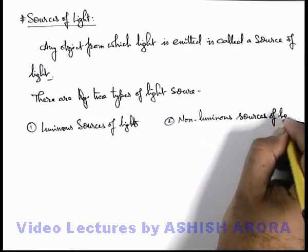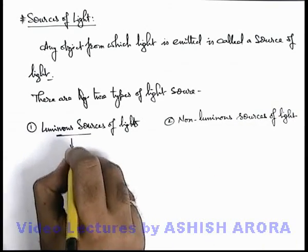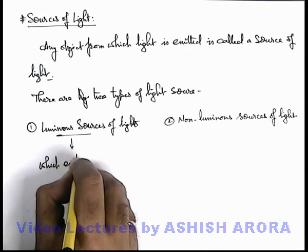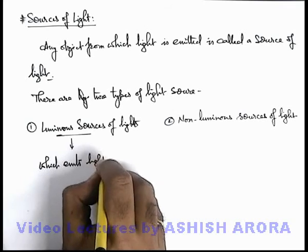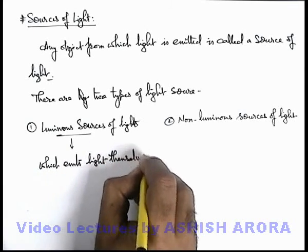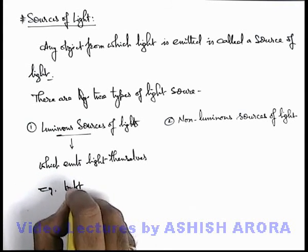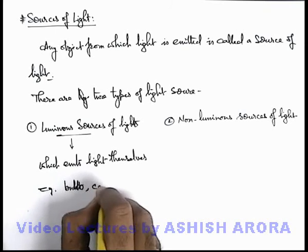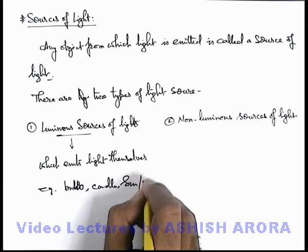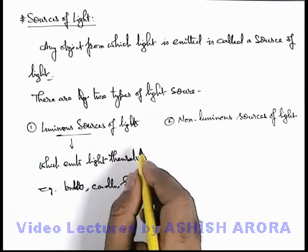As the name implies, the basic difference is luminous sources are those which emit light themselves. For example, a bulb produces light, a candle also produces light, the sun, or various stars also produce their own light. So these are all luminous sources of light.